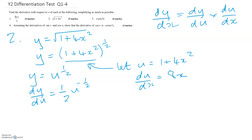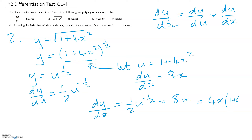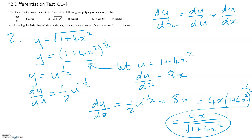Now multiply them together: a half times u to the minus a half, times 8x. That gives you 4x·u to the minus a half. Since u is 1 plus 4x squared, we have 4x times (1 + 4x²) to the minus a half. You could also write this as 4x over the square root of 1 plus 4x squared, which looks a little nicer.